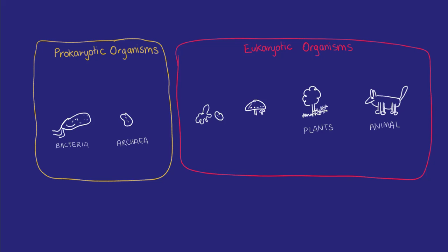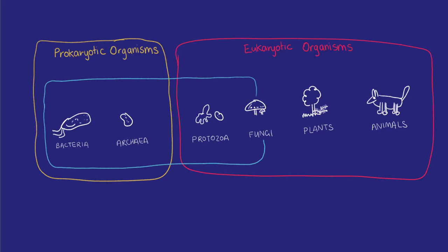Eukaryotes include plants, animals, fungi and protists. These are unicellular eukaryotes like amoebas and other things you might find in pond water.